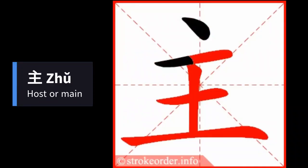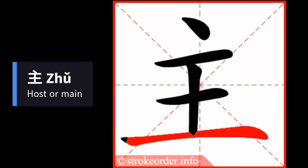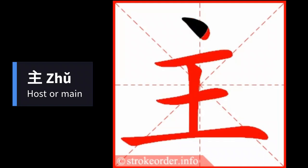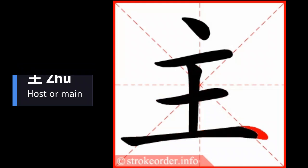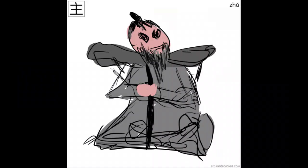In today's video, we'll teach you the Chinese character for host or main: 主 (zhǔ). This is a fun character in the Chinese language because 主 looks like an old man acting like a lord. This makes it easier to learn.